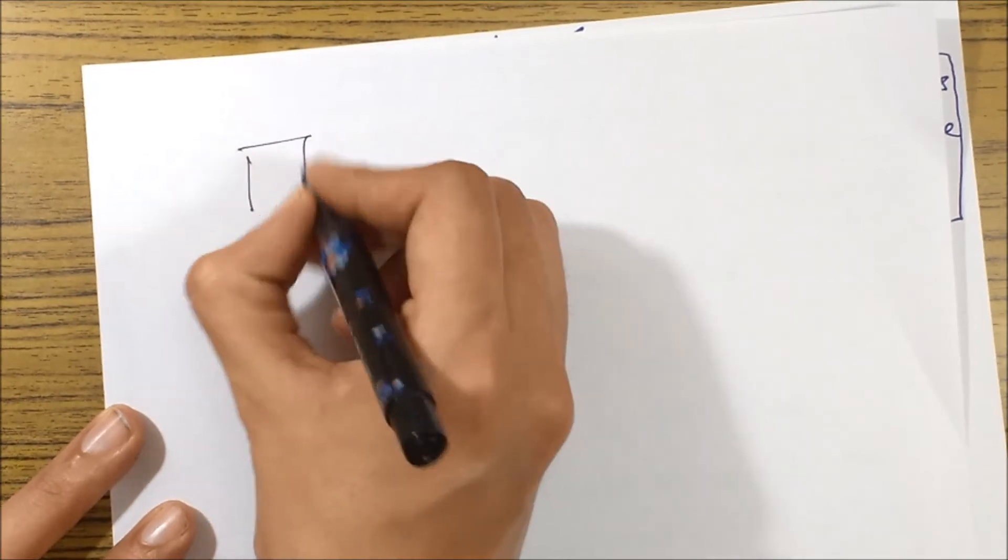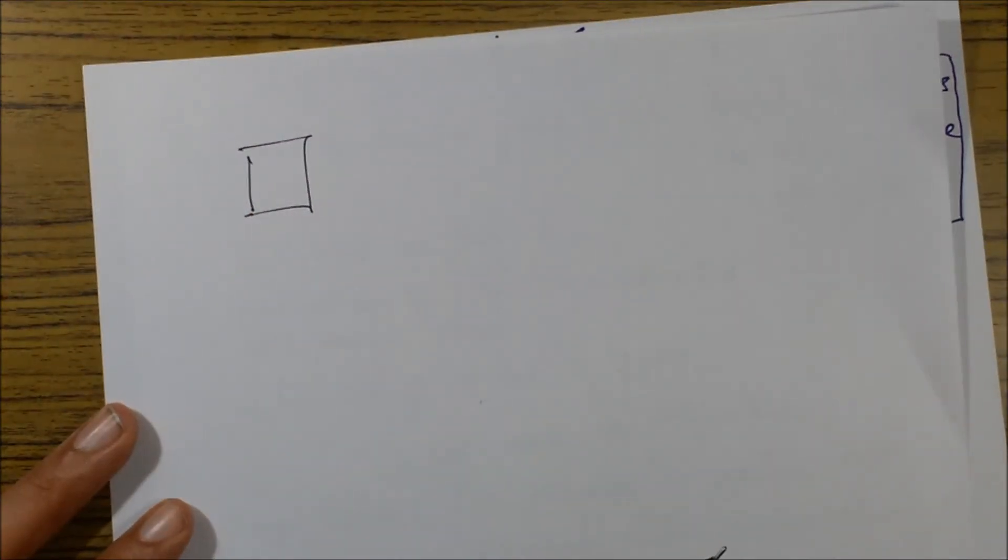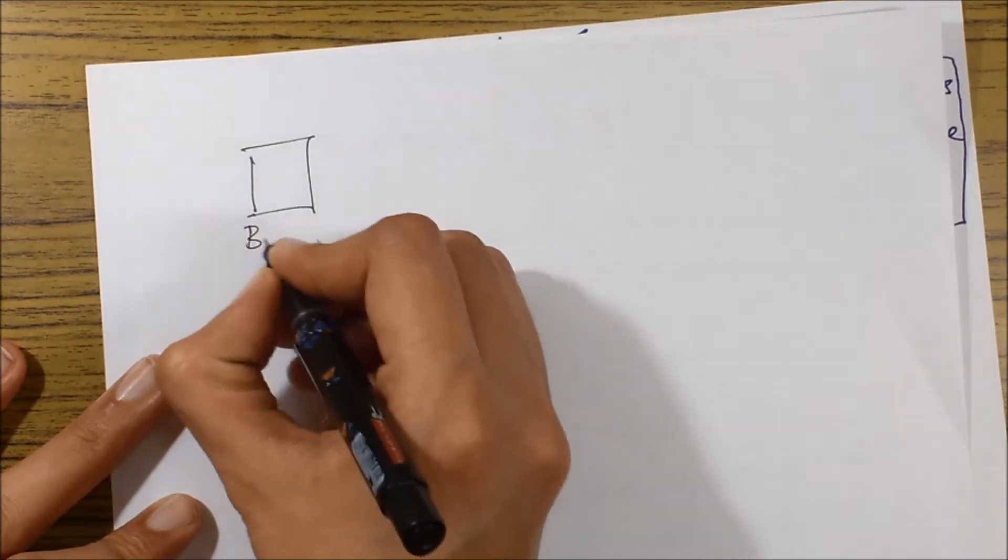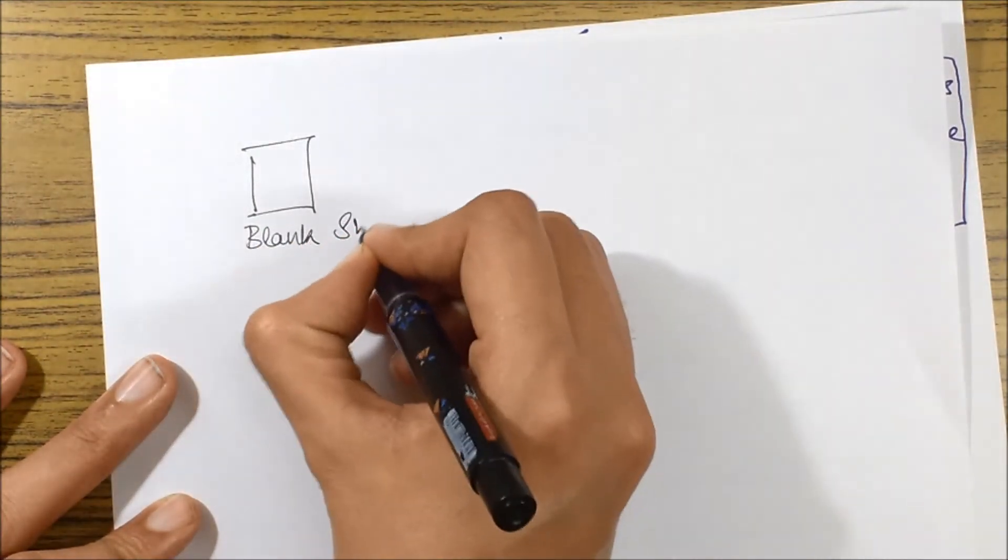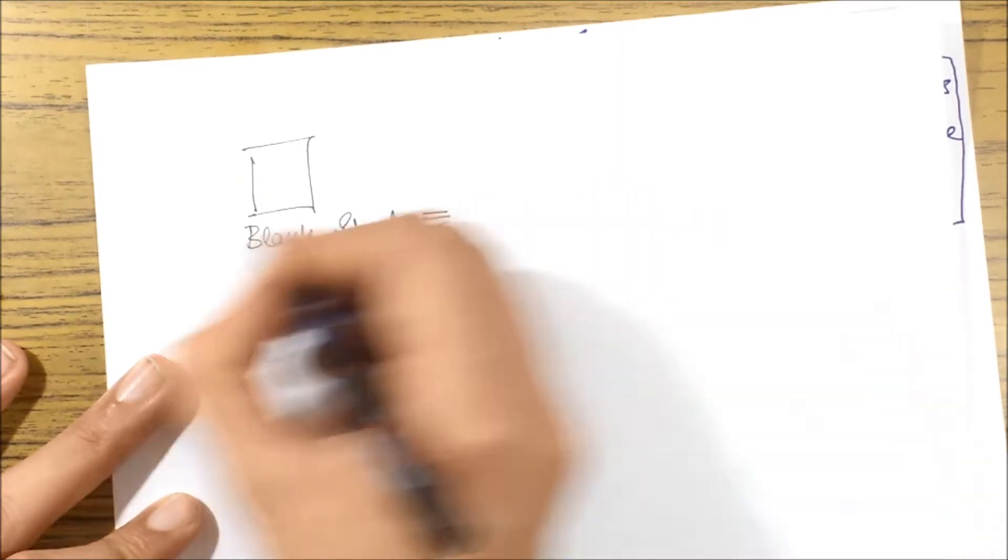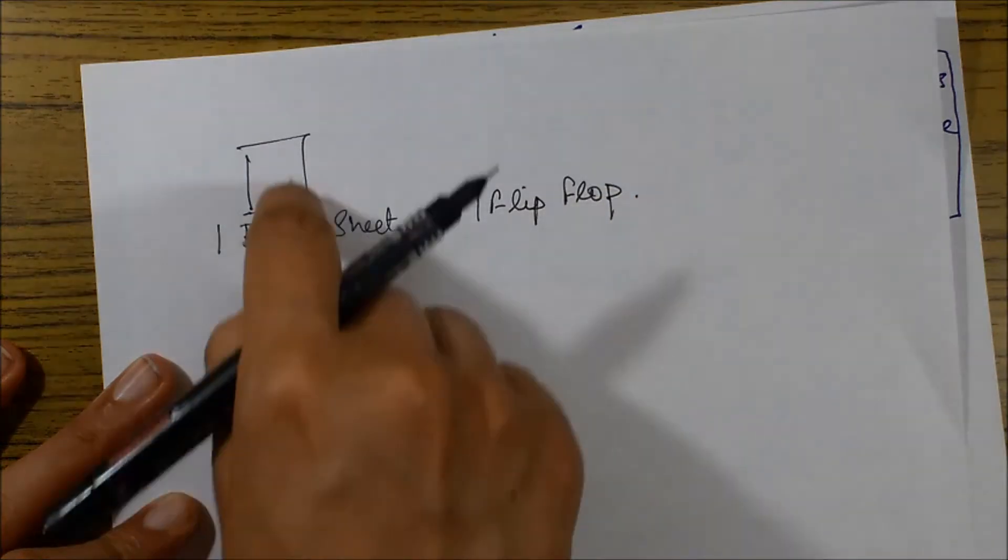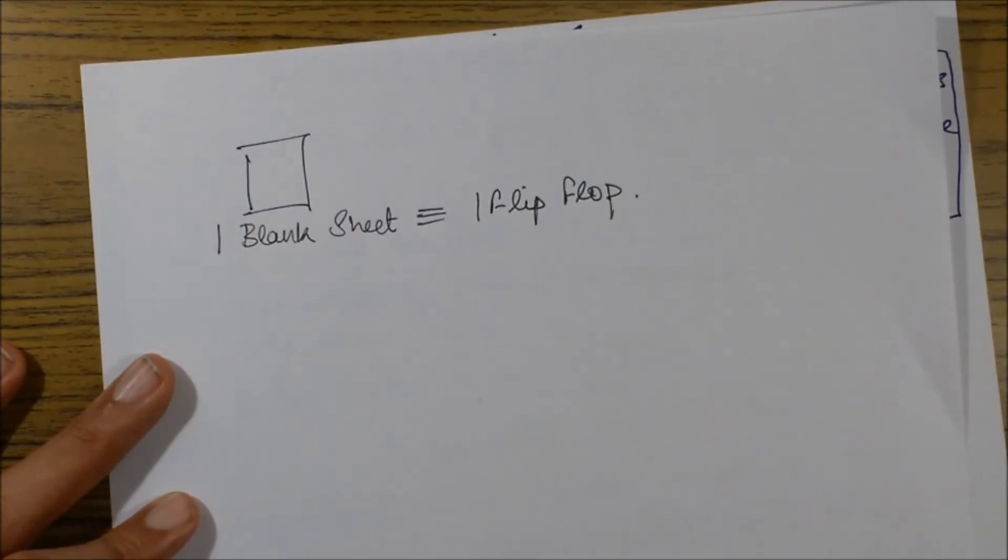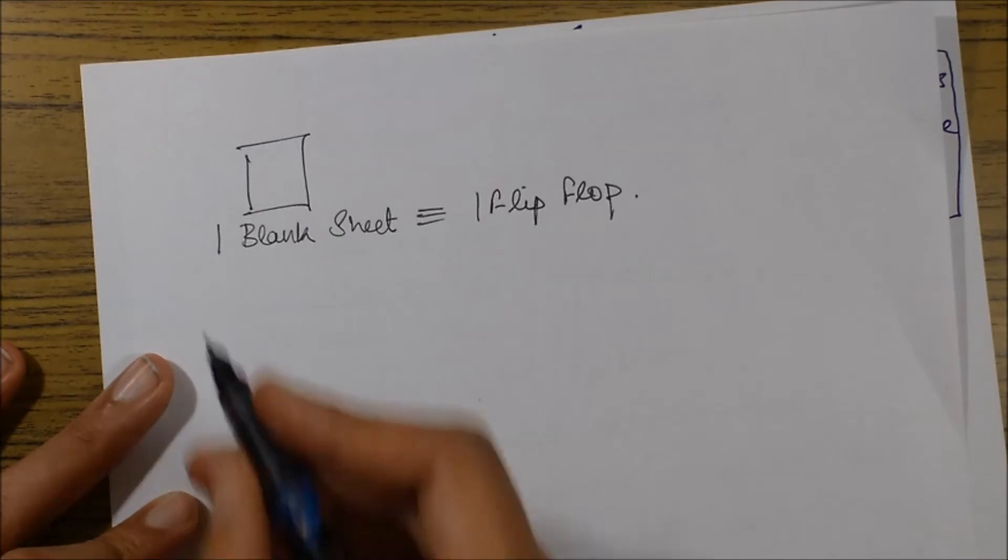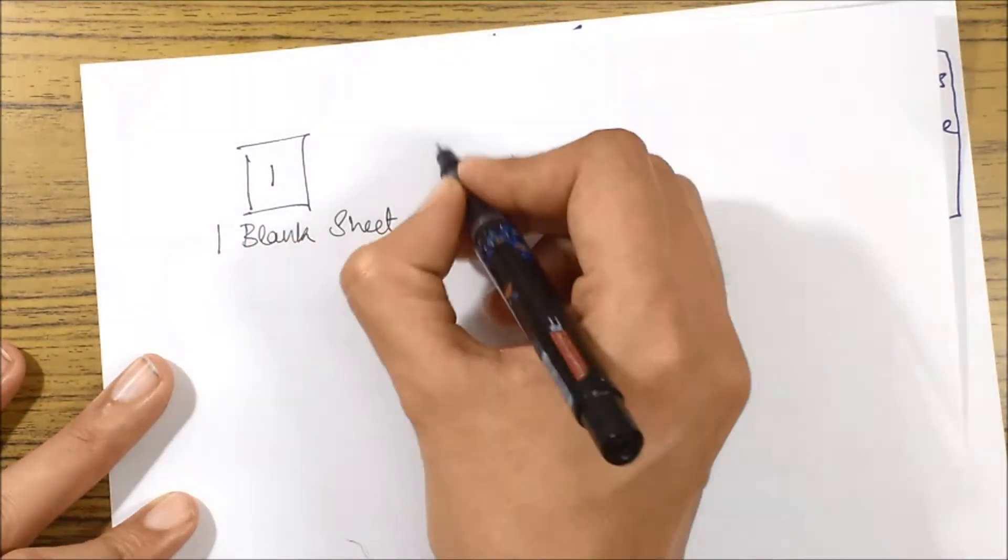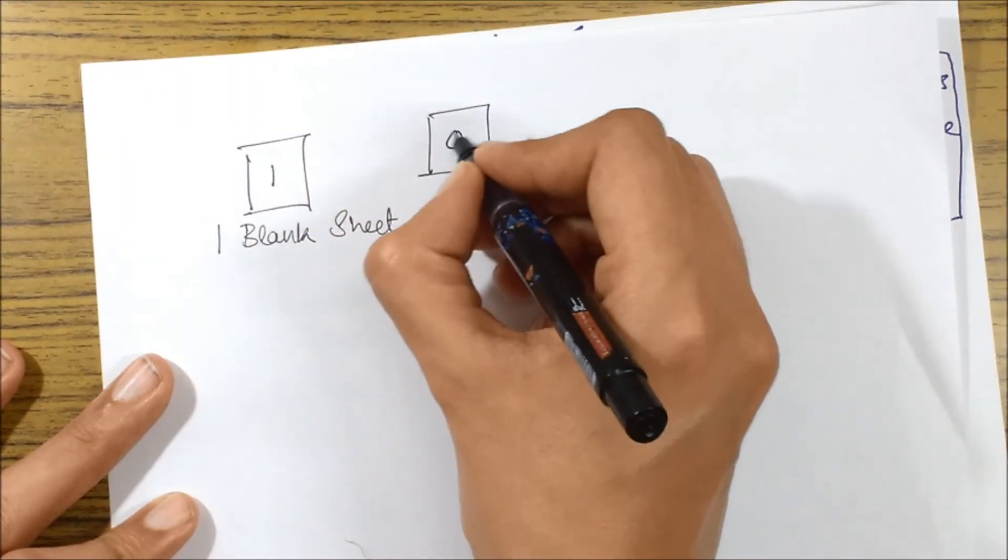If I have one single page or one sheet, I would say I have a blank sheet and I'm storing one bit of data. I take this blank sheet equivalent to a flip-flop. So now this blank sheet represents a flip-flop. If I want to store one bit, I can write only one bit of data on this blank sheet, that is either I can write one or I can write zero.